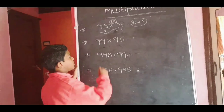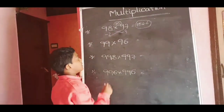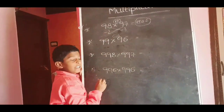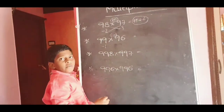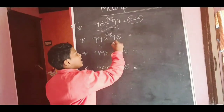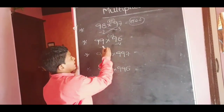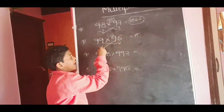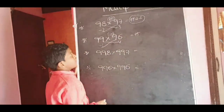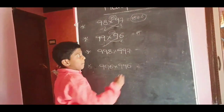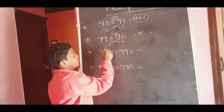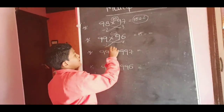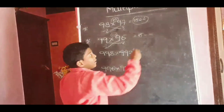Next: 99 into 96. This is nearest to 100. 99 minus 1; 96 minus 4. 99 minus 4 equals 95. 96 minus 1 equals 95. For 100, two zeros means two digits. After, minus into minus is plus: 1 into 4 equals 04. The answer is 9504.